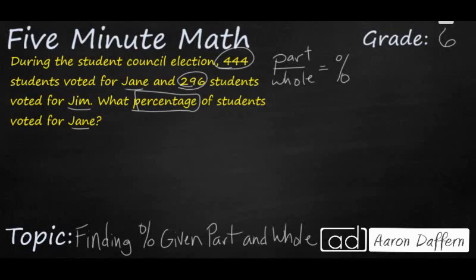So in this case, we are looking for the percent. This is our missing number right here, this percent. So we need to see what is our part and what is our whole. What percentage of students voted for Jane? Jane had 444 students vote for her, so that's going to be our part.